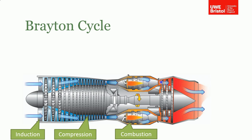The high-temperature, high-pressure exhaust products exit the combustion cans and go over another series of blades — this time turbine blades — which expand the gas as it goes out the exhaust, extracting work. The turbine and compressor are connected via a common shaft, so the turbine also does the work to compress the incoming gas.